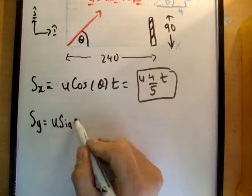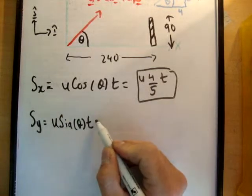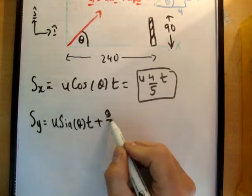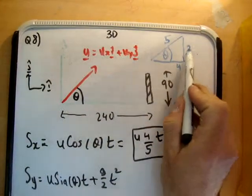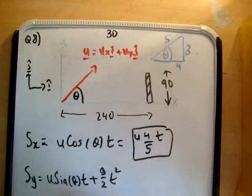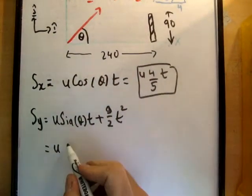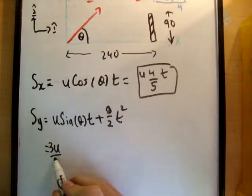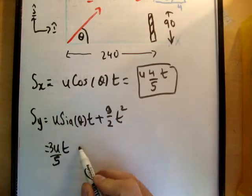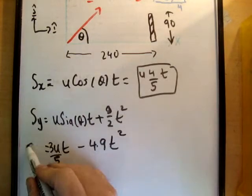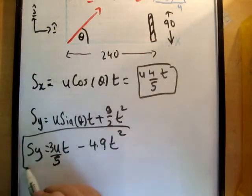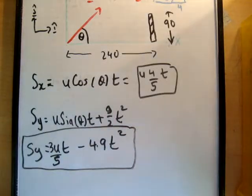So u sin theta t plus g over 2 t squared is equal to u times 3 over 5 for sine minus 4.9 t squared.